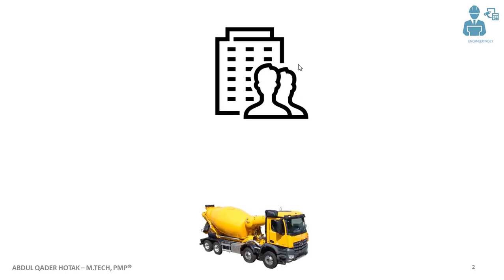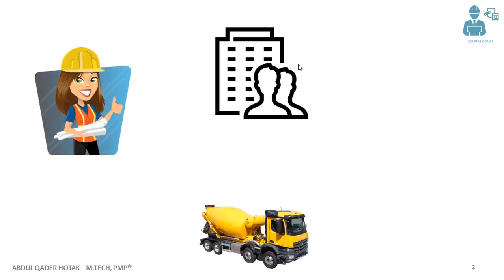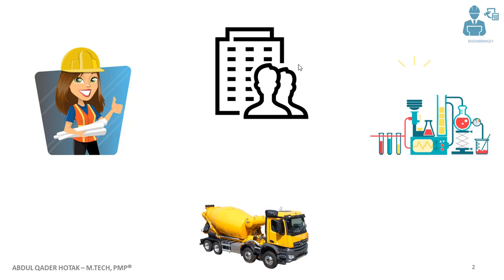In order to simplify it, assume that we have a concrete pouring activity in one of our projects. The parties involved will be the organization, the activity itself, the contractor, and the laboratory. In order to begin this process, a trigger from the project is given to the organization or the company.